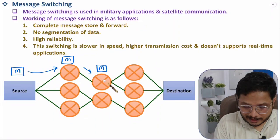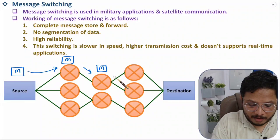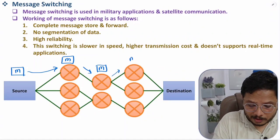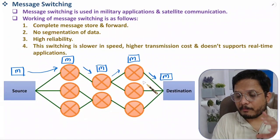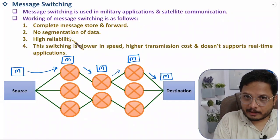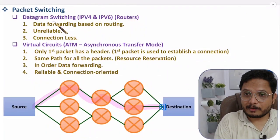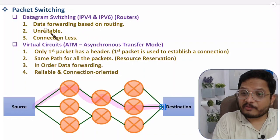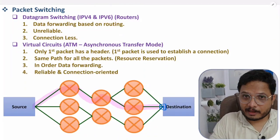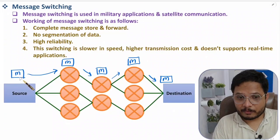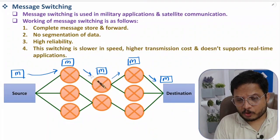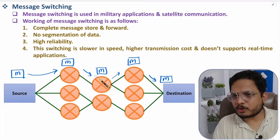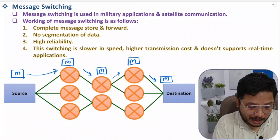The message continues to be forwarded hop by hop — stored at each router — until it reaches the destination. Because there is no segmentation and the complete file is always available at each hop, there is no point of data loss, giving message switching high reliability. Compare this to datagram switching, which does fragment data.